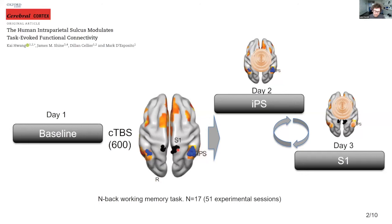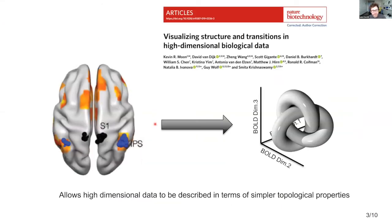Also a region not involved in the execution of this working memory task was selected — the S1 somatosensory region shown here in black. Individuals then came back for two independent visits. Before entering the scanner and doing the task again, people received cTBS — the standard 600-pulse cTBS on S1 or parietal cortex in a counterbalanced fashion — to understand if stimulation on the system involved in working memory was specific or not.